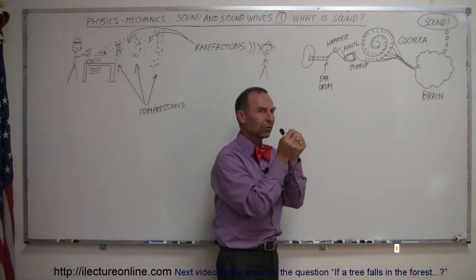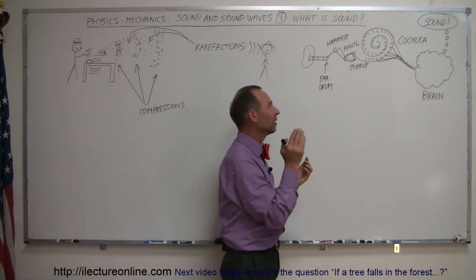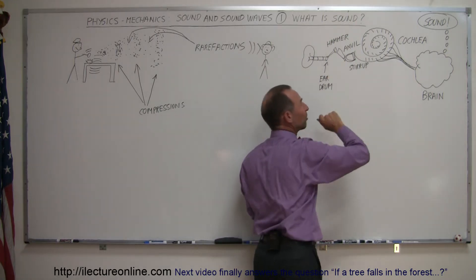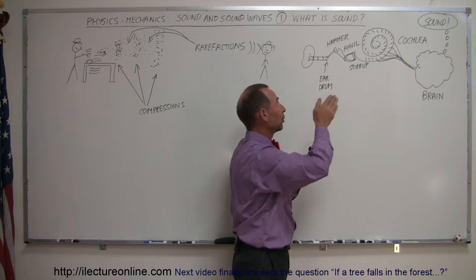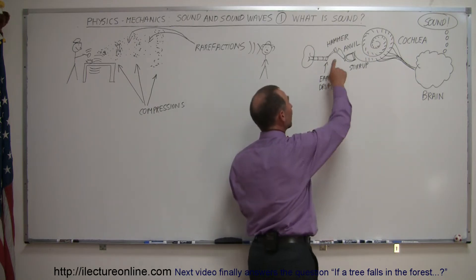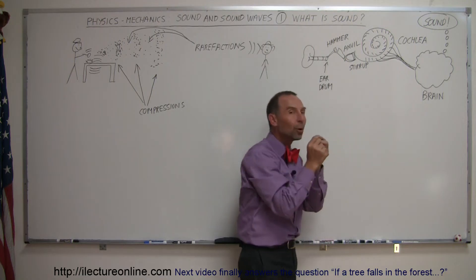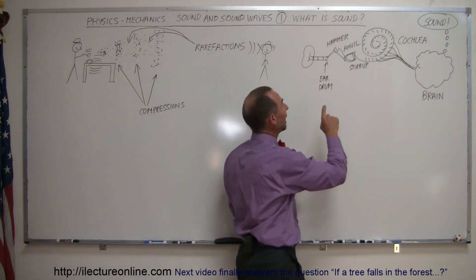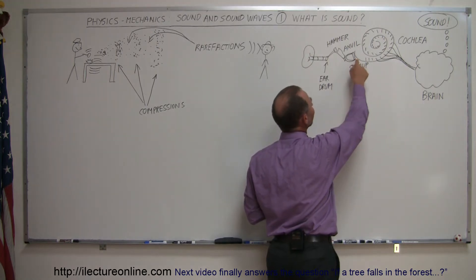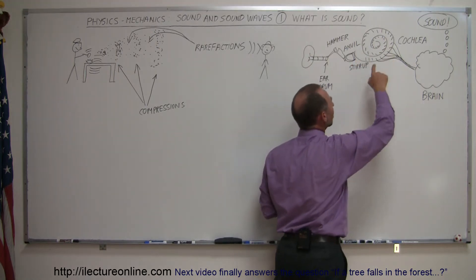So once they get into the eardrum, the eardrum begins to vibrate at the same frequency as the air molecules are vibrating. The eardrum is connected to something called a hammer. That hammer will then start vibrating at the same frequency as the eardrum. It'll slam into a little bone called the anvil. And then the anvil, which is connected to the stirrup, is then connected to something called the cochlea.